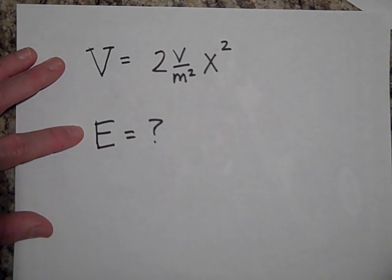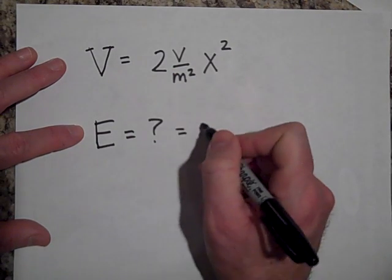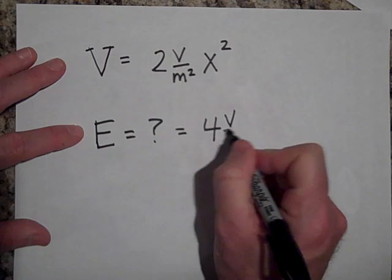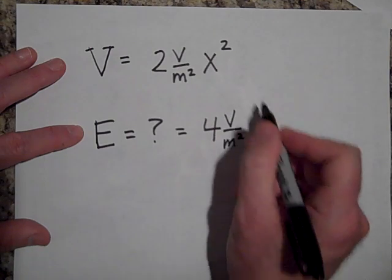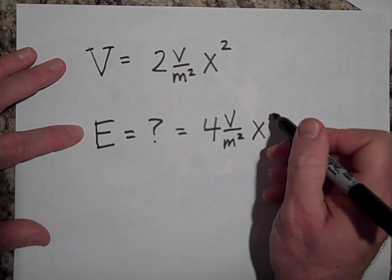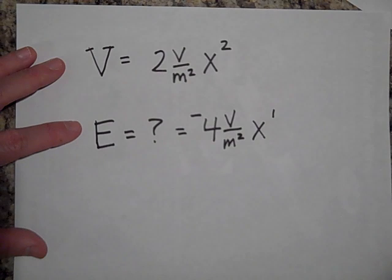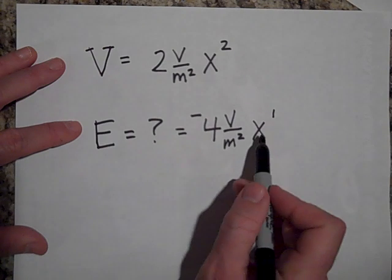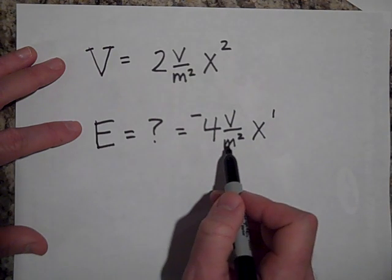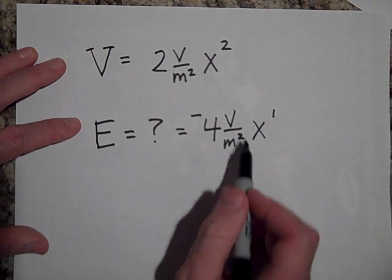Okay, so just take the negative derivative of that. So the electric field is going to be equal to four volts over square meters times x to the first power. And then I got to put a little negative sign there. So that's what the electric field is going to be. So if I put in like at one meter then the one meter will cancel out one of those meters and I'll get - it's going to be negative four volts per meter.